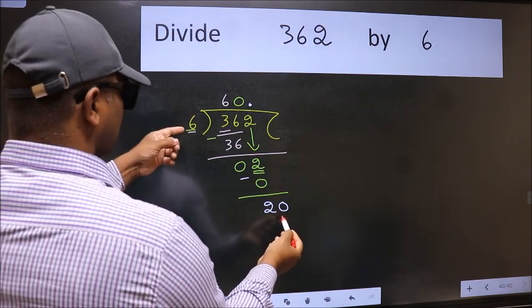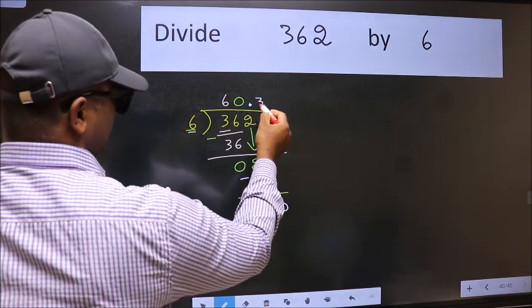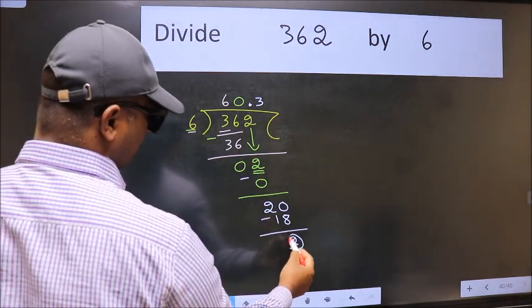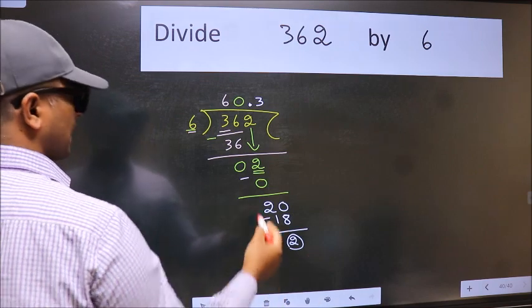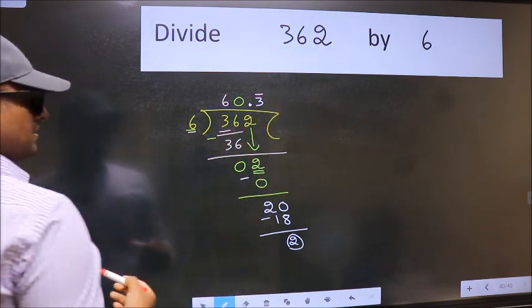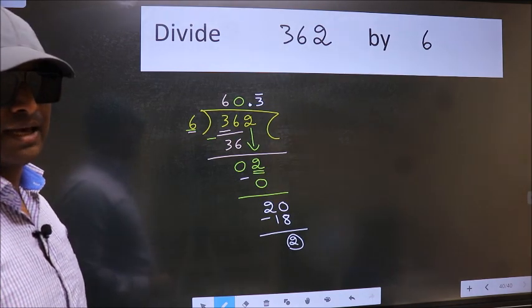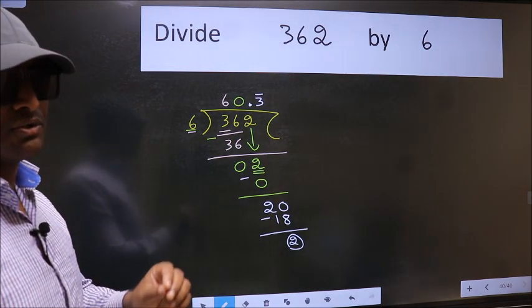A number close to 20 in 6 table is 6 times 3 is 18. Now we subtract. We got 2 again. That means we get bar on this number. Did you understand where the mistake happens? You should not do that mistake.